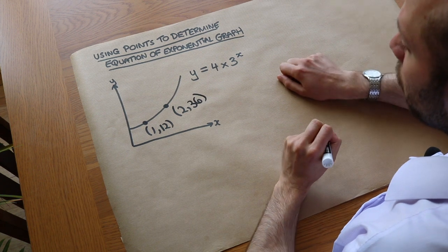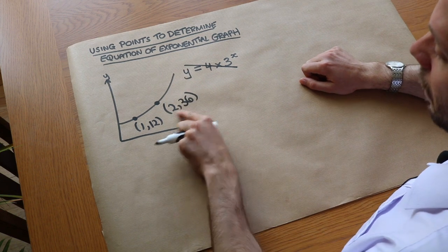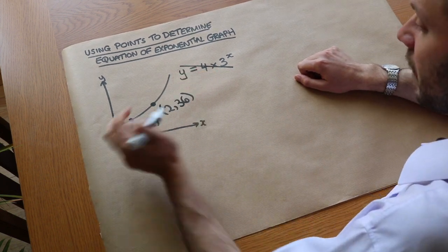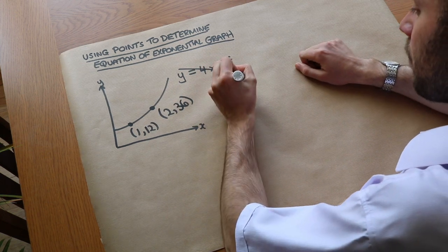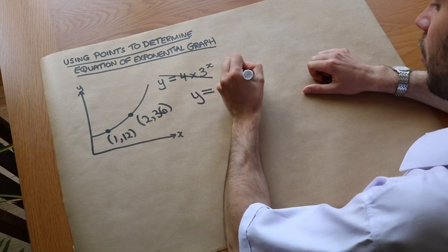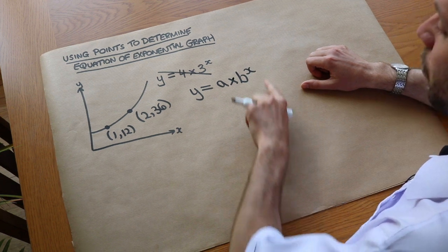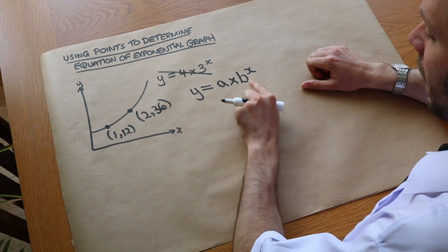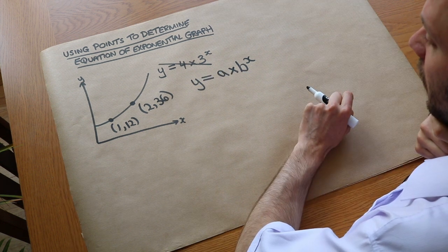Now suppose we didn't know the original equation and were just given these two points on the graph. If we know it's an exponential graph, the general equation is y equals a times b to the power of x, where a and b are unknown constants and x is the variable. We need to work out what a and b are.